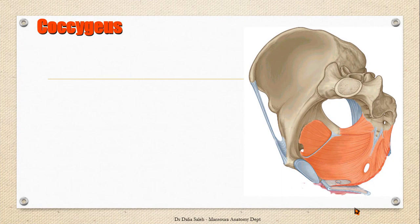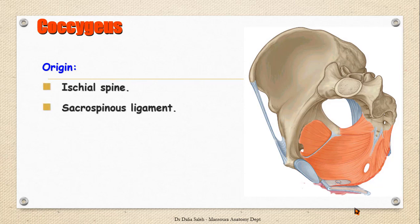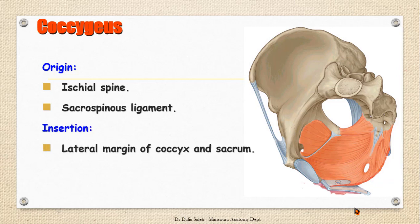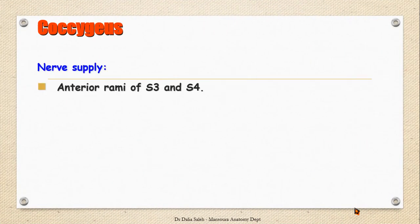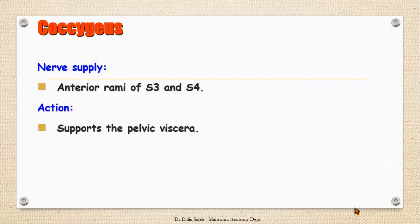The last muscle to discuss is the coccygeus muscle. It is a small triangular muscle that takes origin from the ischial spine and the sacrospinous ligament, and inserts at the lateral margin of the coccyx and sacrum. In elderly people, this muscle becomes fibrosed and transforms into the sacrospinous ligament, making it indistinguishable from it. Its nerve supply is from the anterior rami of the third and fourth sacral nerves, and its actions are to support the pelvic viscera and to pull the coccyx forward after defecation.